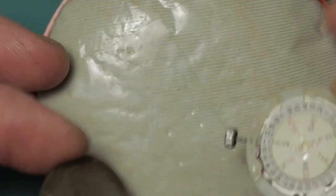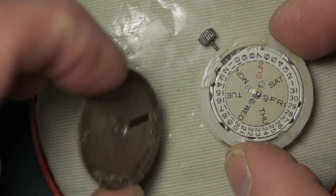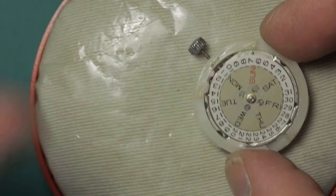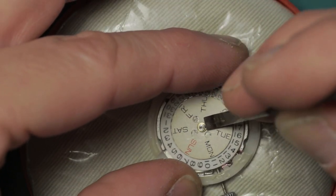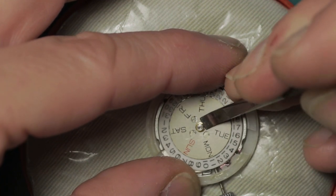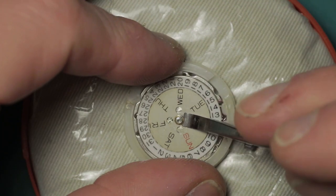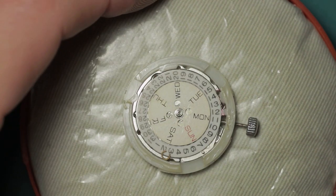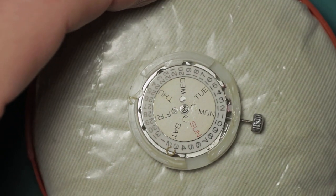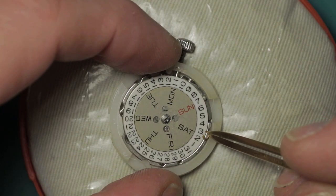Now with these types of movements with the day and date complication, it typically means there is no to very little room to actually apply dial dots or glue and attach the dial, so that's actually been beneficial in this instance because it means they glued it to the movement ring instead. The dial that I'm replacing it with has the dial feet intact, so thankfully it's not a problem.